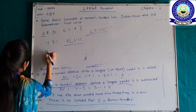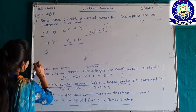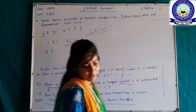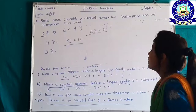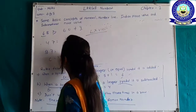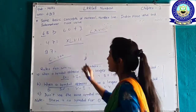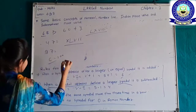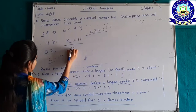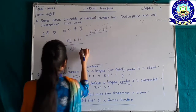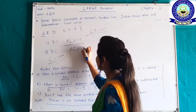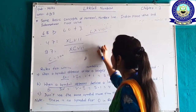Next example: how do we write 97? We use C for 100 and place X before it to get XC for 90, then VII for 7 — so 97 is XCVII.